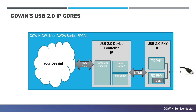Go-in now offers USB 2.0 IP cores, which include the USB 2.0 PHY IP as well as the USB 2.0 Device Controller IP. These IP cores can be used to stream data to and from a USB host, such as a PC.